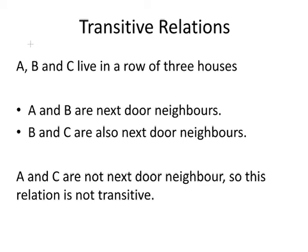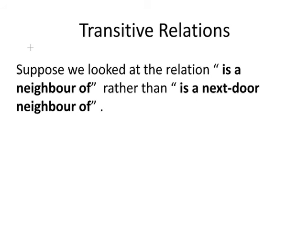A and C are not next door neighbors, so this relation is not transitive. But let's consider how we can change that, how we can look at this a bit differently. Suppose we look at the relation 'is a neighbor of,' where a neighbor means that you live on the same street, rather than being strictly next door neighbors.